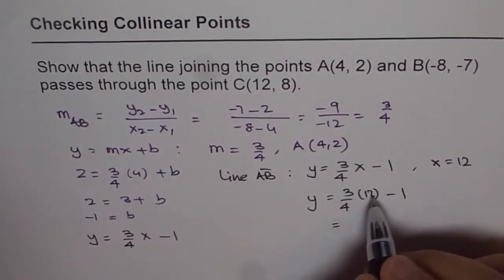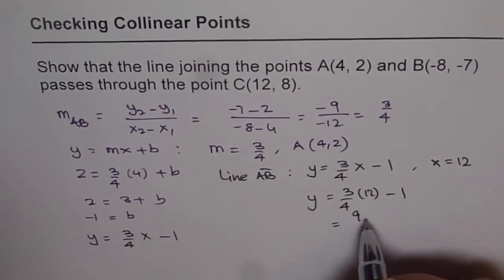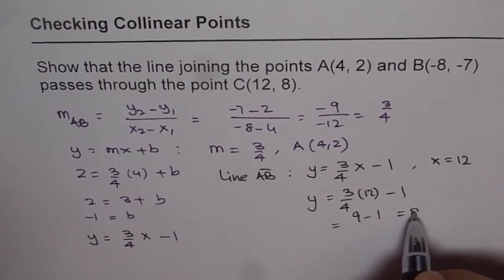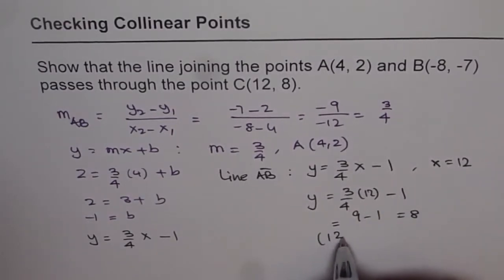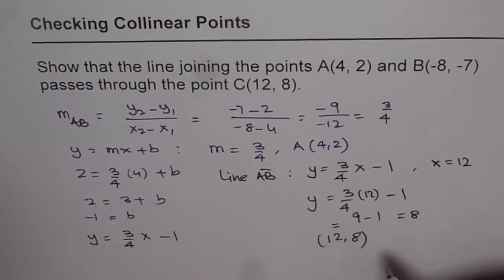So we get y equals 3/4 times 12 minus 1, which is 4 goes 3 times, so 9 minus 1, which is indeed 8. And therefore, this point (12, 8) lies on the given line.